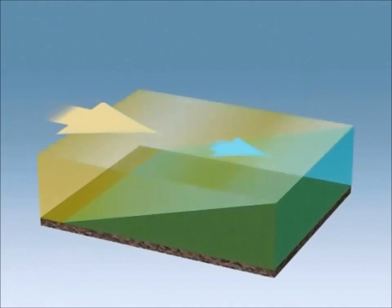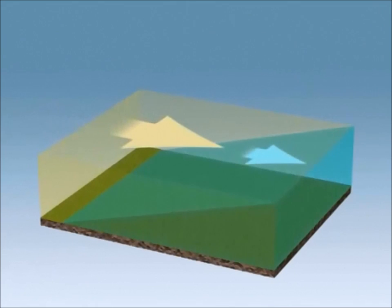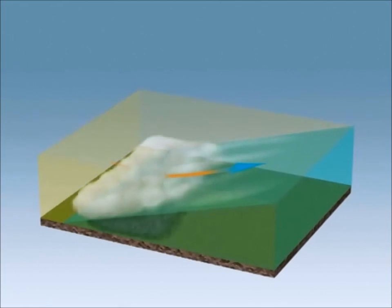When a warm air mass meets a cold air mass, the warm air rises since it is lighter. At high altitude, it cools and the water vapor it contains condenses. This type of front is called a warm front.